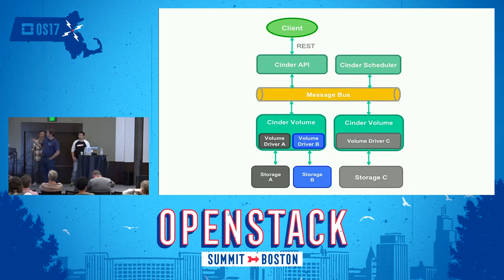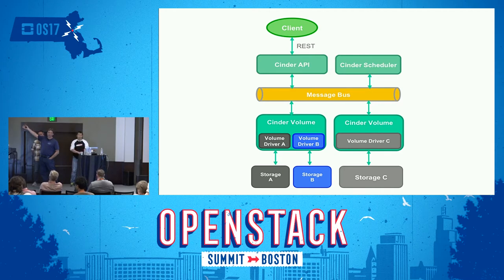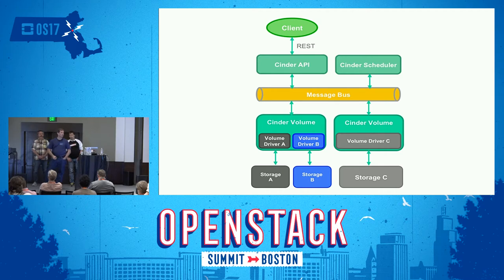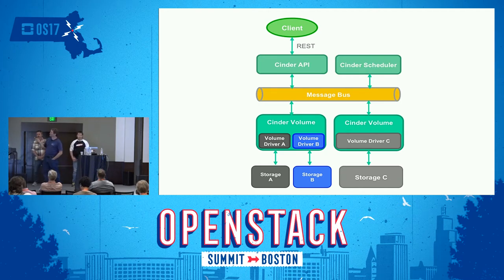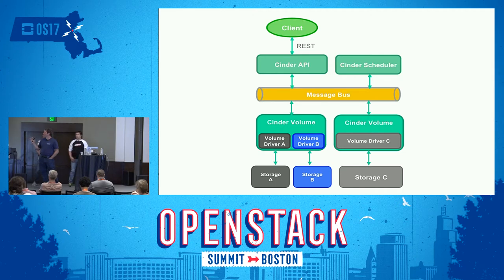This is kind of what Cinder looks like. Similar to many OpenStack services, you connect to the Cinder API server via REST, either through the client or directly with HTTP. A message bus transmits messages from the API to the scheduler to determine where to deploy a volume, where to create it, depending on criteria you may have set up in your configuration. The message bus also passes information to the Cinder volume server, which does the work for Cinder. Volume servers have drivers that interface with the underlying storage.